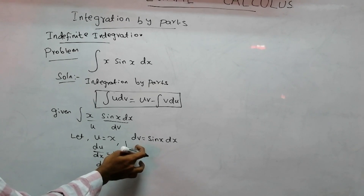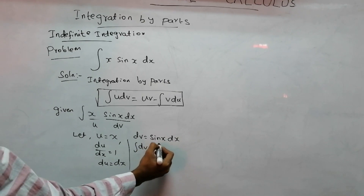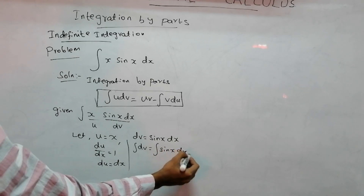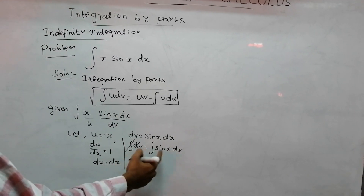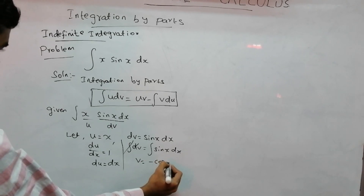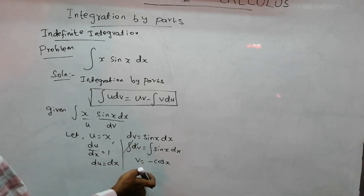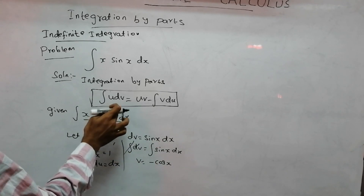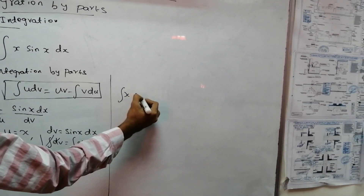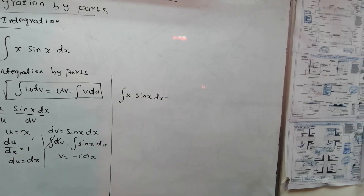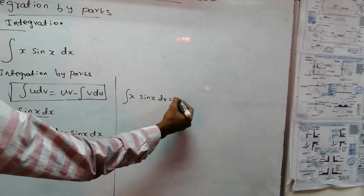Since dv is sin(x)dx, v will be equal to minus cos(x). So we need v to apply the formula. Calling du and v, we apply this formula: the integral of x·sin(x)dx, where u has value x and v has value minus cos(x).